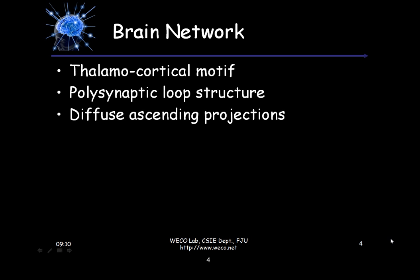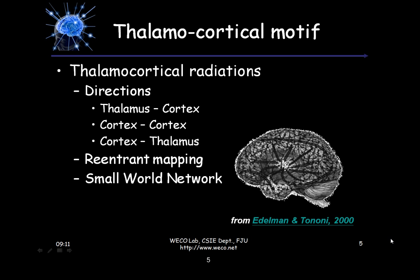This is the brain network. We can consider the brain in three types of networks. The first is the thalamocortical motif, the second is the polysynaptic loop structure, and the third is the diffuse ascending projection. In the later slides I will give you more detailed information.